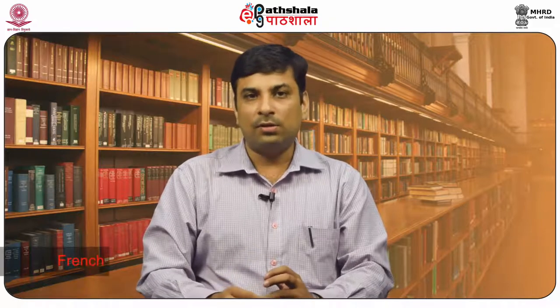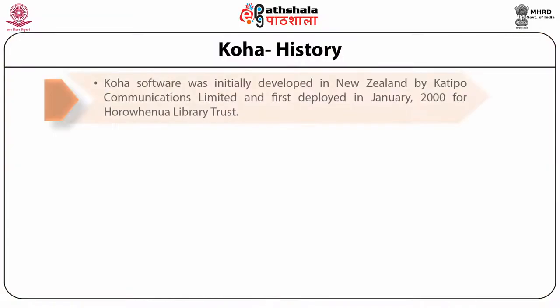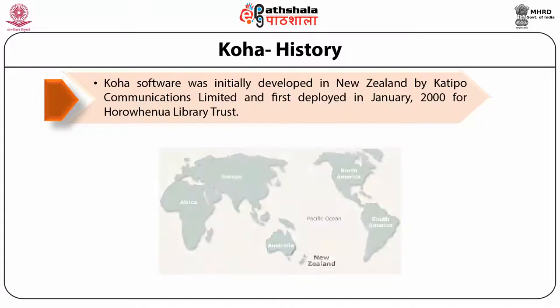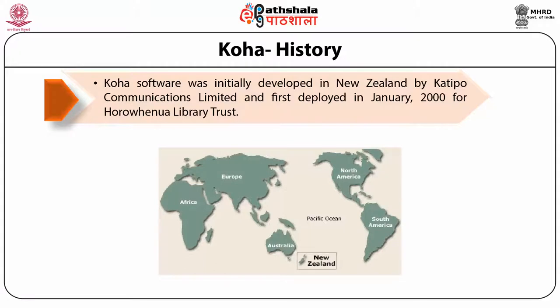Koha has four specific language websites — French, Chinese, Italian, and Spanish. Koha software was initially developed in New Zealand by Katipo Communications Limited and was first deployed in January 2000 for the Horowhenua Library Trust. Since the original implementation, Koha has been adopted by thousands of libraries worldwide, each adding features and functions deepening the capability of the software.